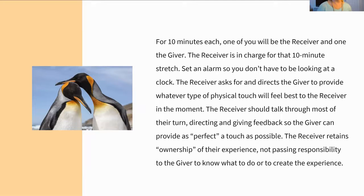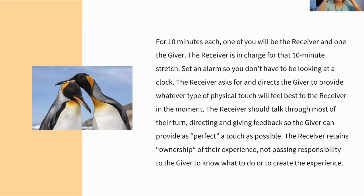The directions for this exercise: for 10 minutes each, you're going to take 10-minute turns. One person is the receiver, one is the giver. The receiver is totally in charge. You set an alarm for 10 minutes. The receiver is thinking about what touch they would like most in this moment — and then the next moment, and the next moment — and you have to direct the whole time. You're going to be talking through most of your turn, giving direction and feedback and instructions, so that you're getting as close to what you want as you can. You need to own the experience. It never becomes the giver's job to figure it out or take over. Nothing happens that you don't specifically invite. They are never supposed to improvise, take it from there, or read your mind. You need to direct the whole time when you're the receiver.